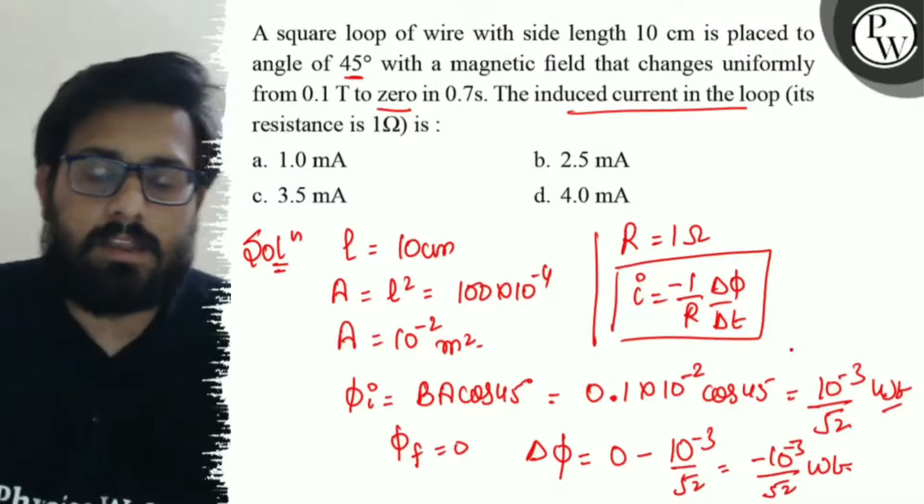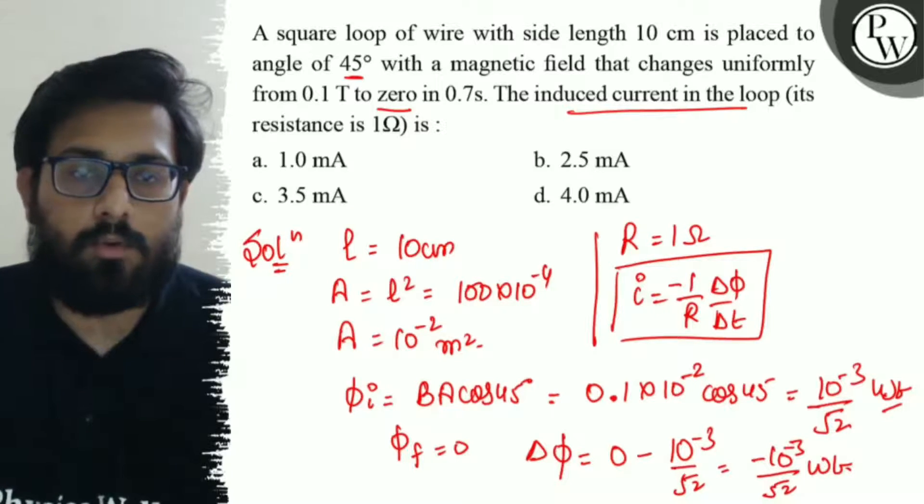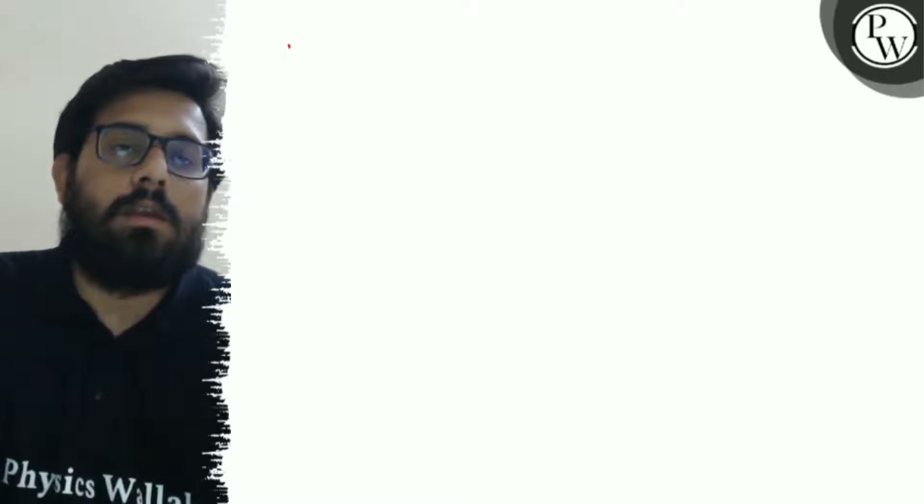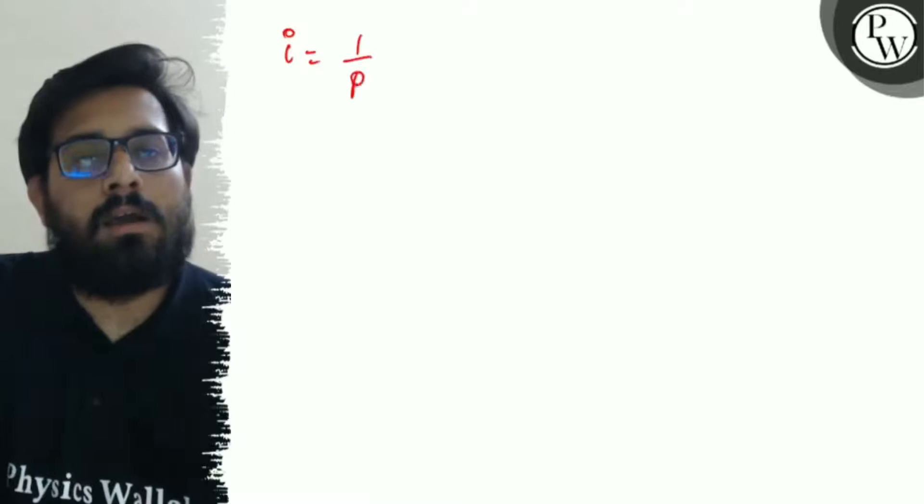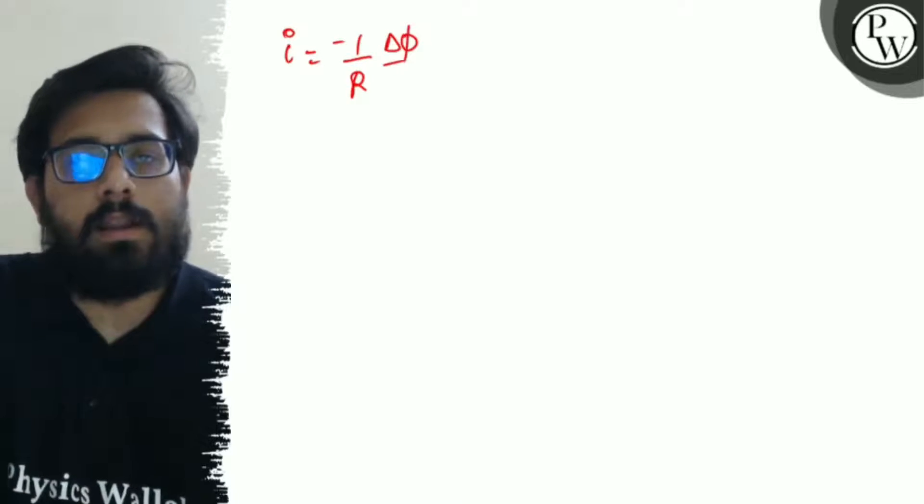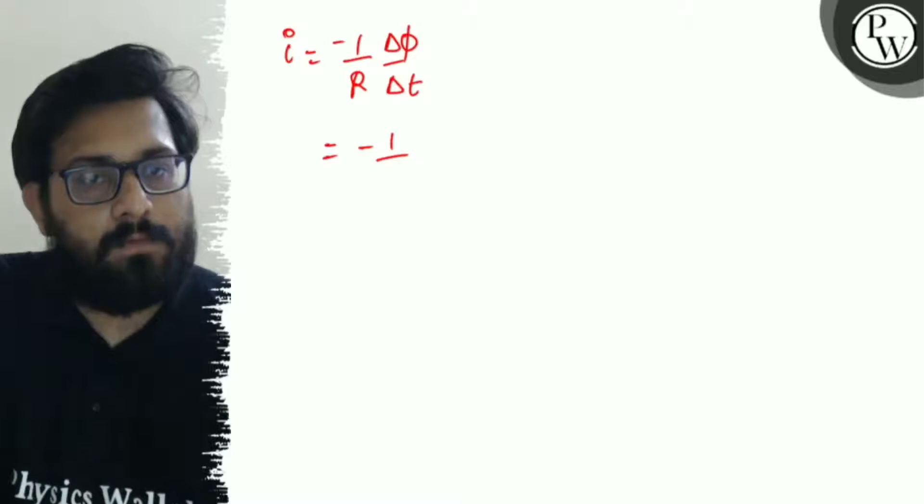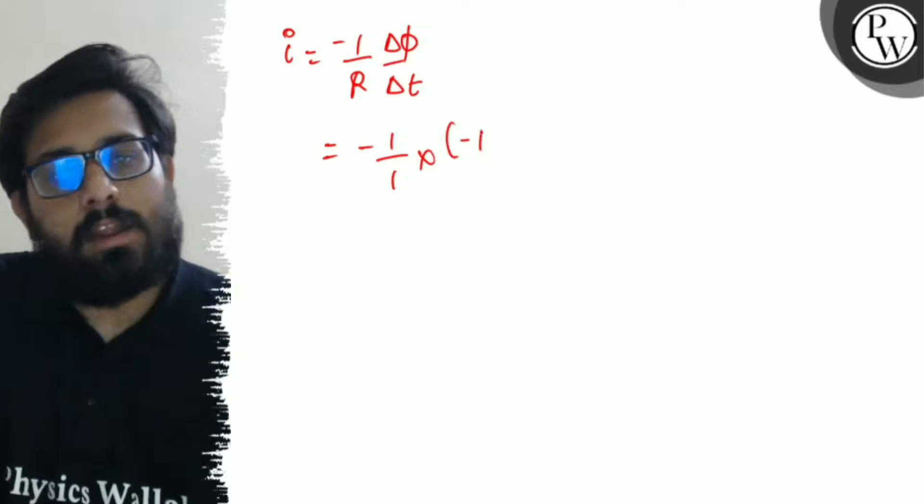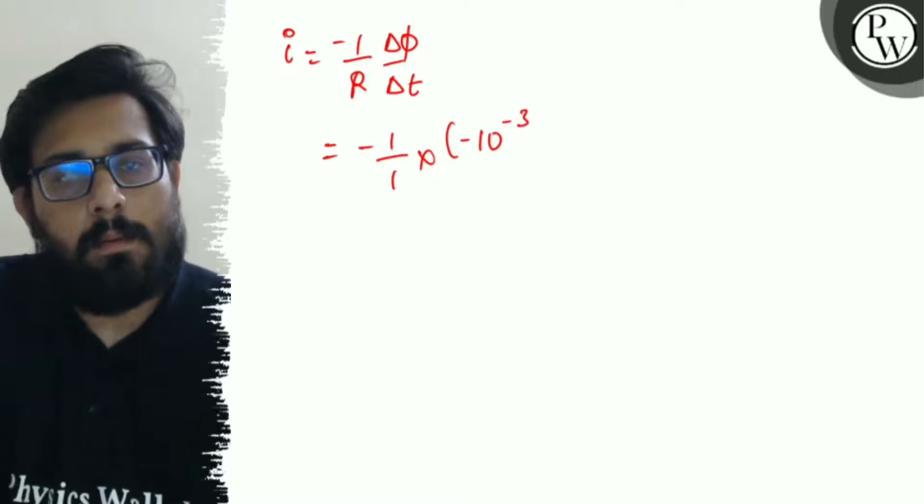So delta phi is minus 10 to the minus 3 by root 2. So you have i equals 1 by R times delta phi by delta t, which is minus 1 by 1 into minus 10 to the minus 3 by root 2 into time interval of 0.7.